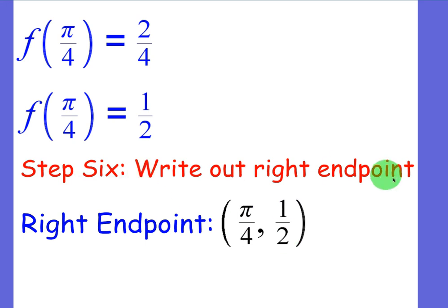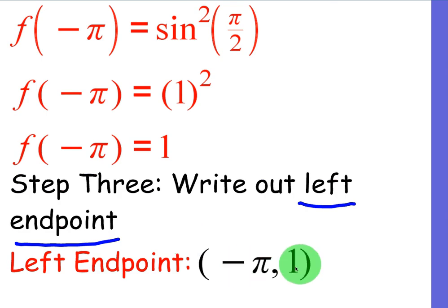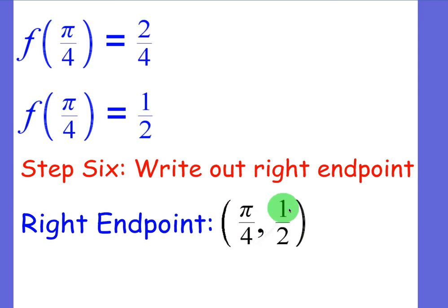And so for step six, just write out your right endpoint. So you just have two endpoints. Your left endpoint is negative pi comma 1. Your right endpoint is pi over 4 comma 1 half, and that's it. And again, this is useful for when you're graph sketching and you want to narrow down your domain.